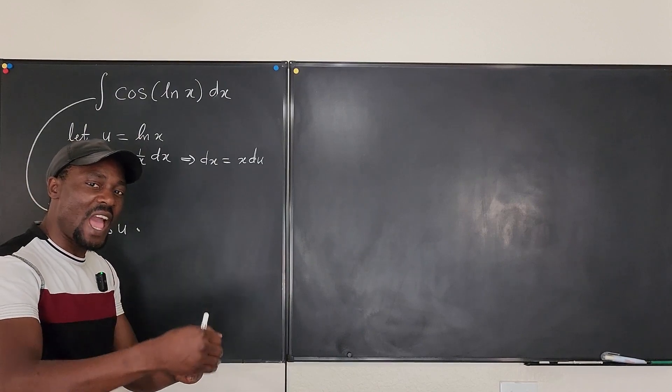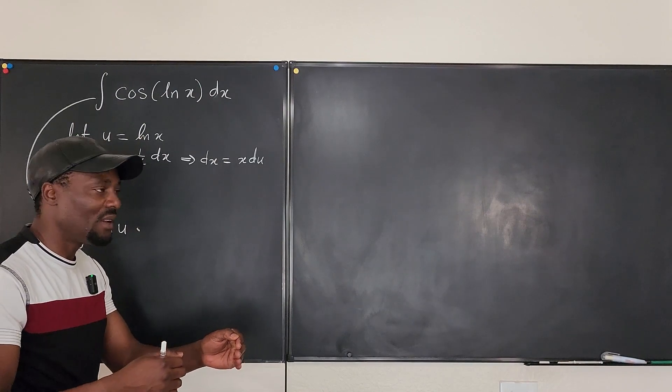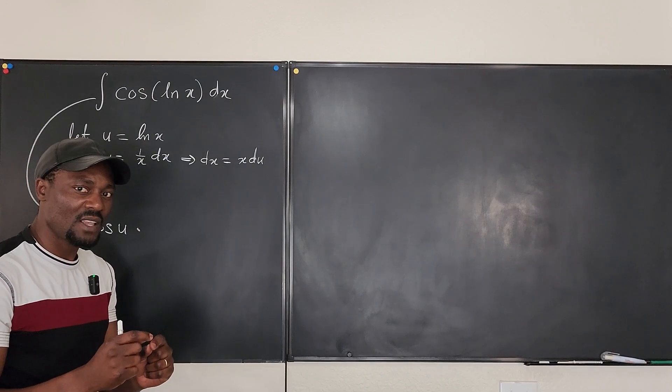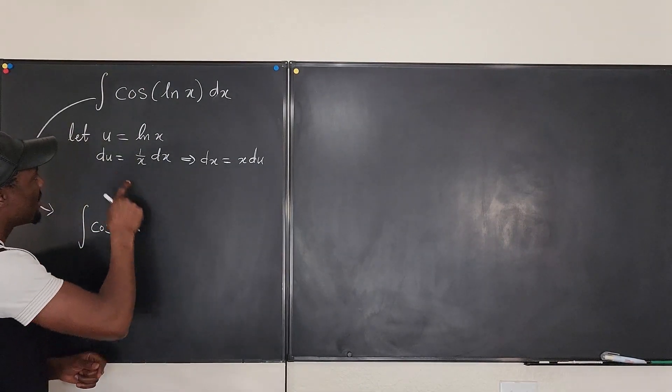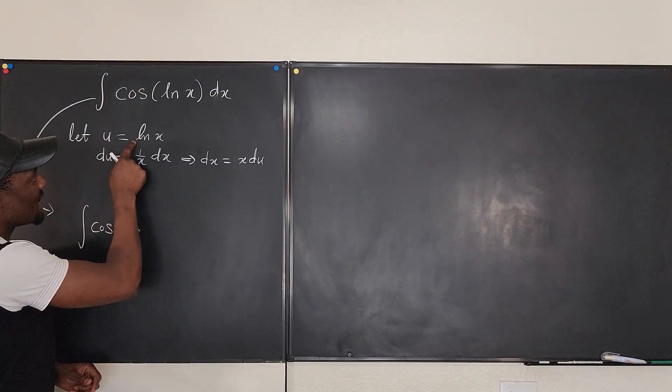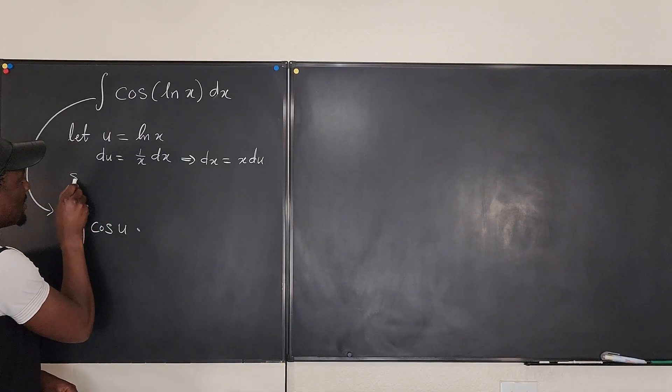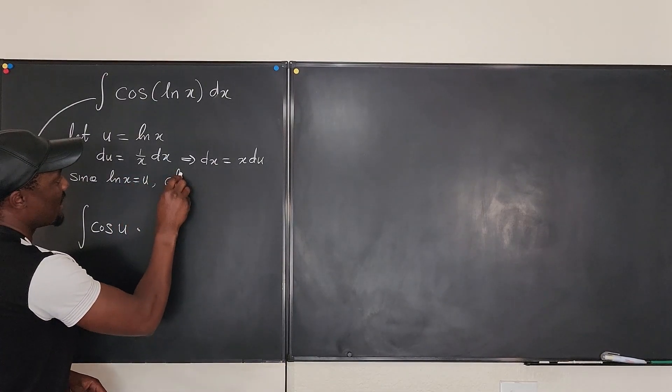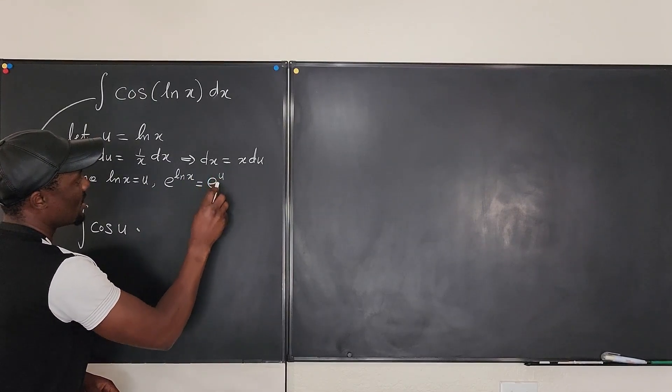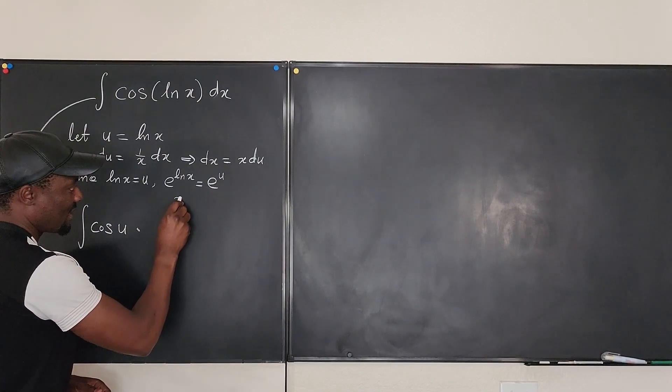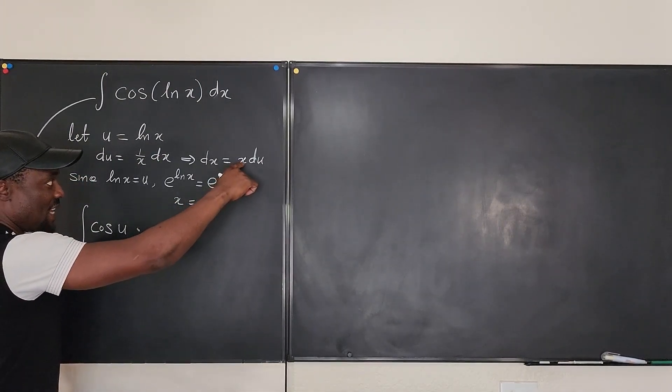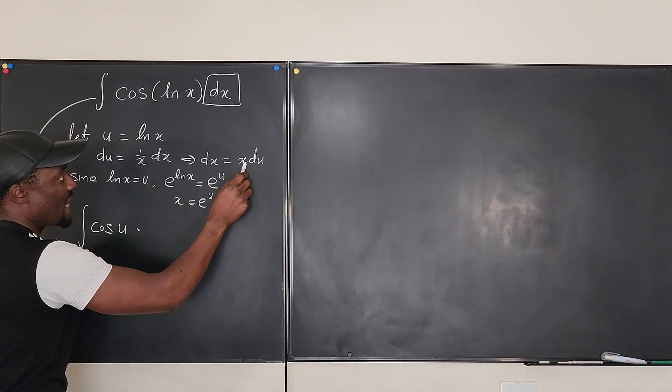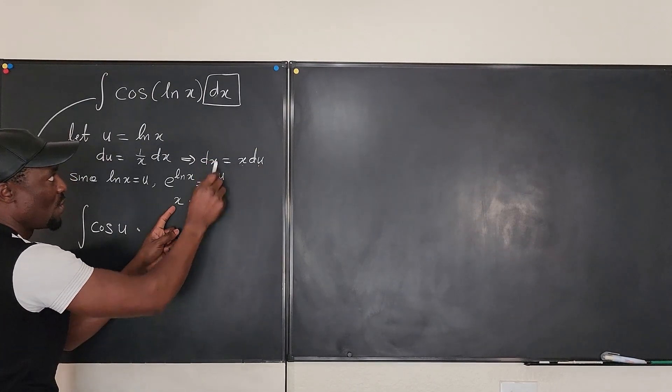But we don't want to have x anymore because we want to do everything in terms of u. So the question is, how can you write x in terms of u? Well, obviously it's not here, but can we do something with this expression? If u is the natural log of x, what is x? Well, remember, if you express this as e to the u and e to the u, you're going to isolate your x. So we can say since the natural log of x equals u, then we have e to the ln of x will be e to the u. And we know that e to the ln of x is what? It's just x. Nice. So instead of writing x, we're going to go back here and replace the x here. We're gonna be replacing it with x du, but we just said x is e to the u.